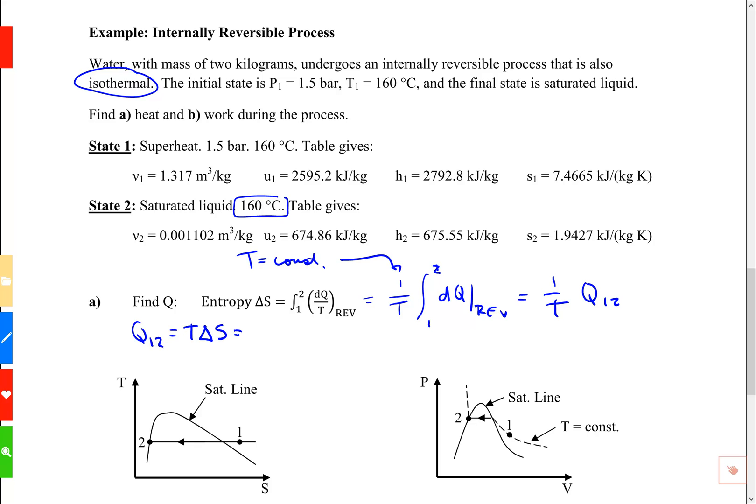Q from 1 to 2 is simply T times ΔS. But this is capital S. The table gives us little s. So I'm going to write this as T times mass times Δs. And for handwriting I use script S there.